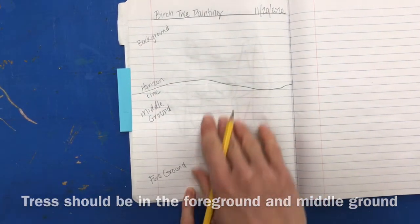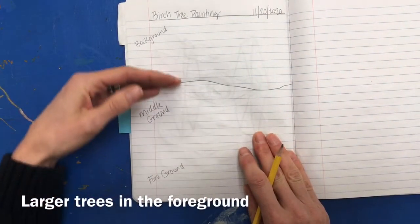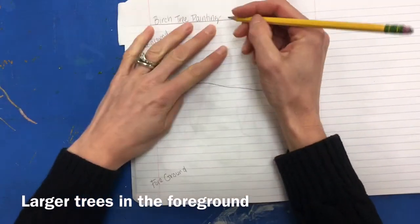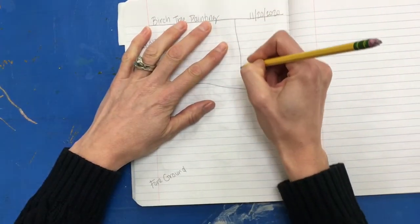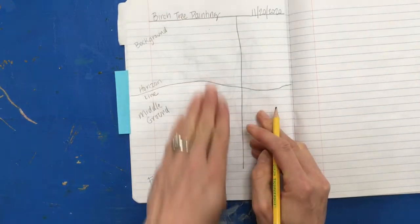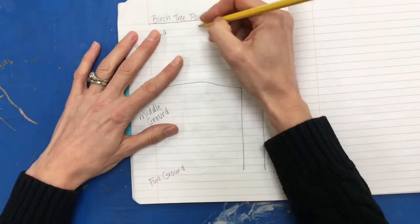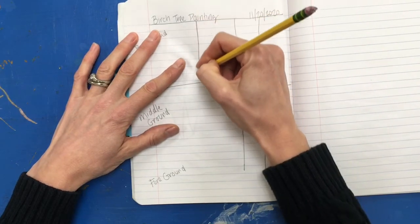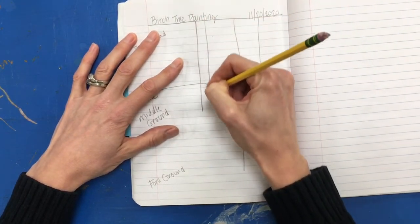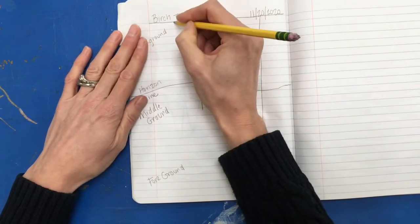It is helpful not to place a tree directly in the middle of your painting, to place a bigger tree off to the side. And then I'm just going to have three trees in my picture, and then a third tree over here.